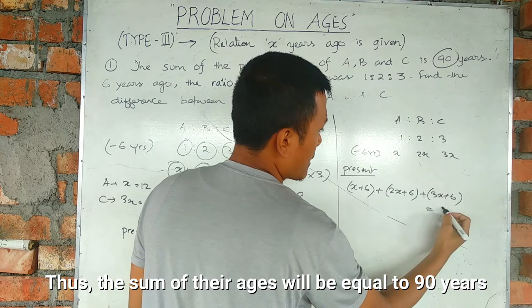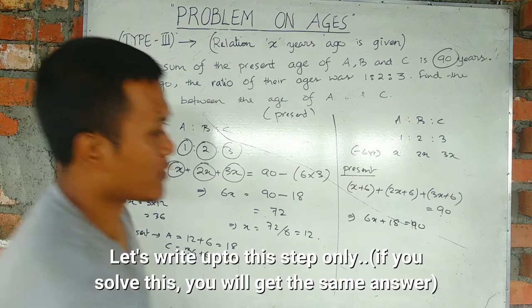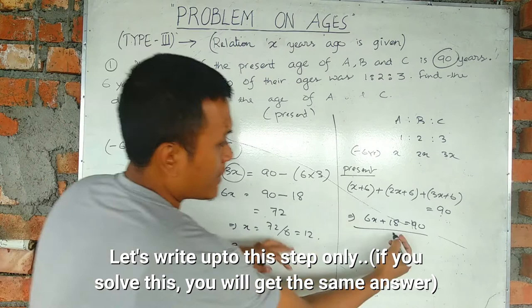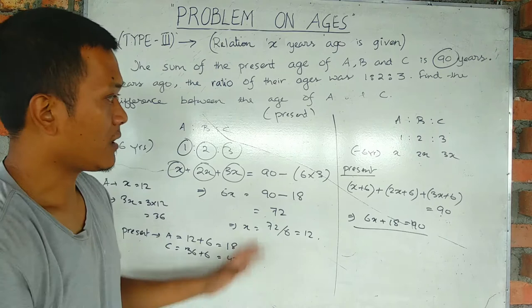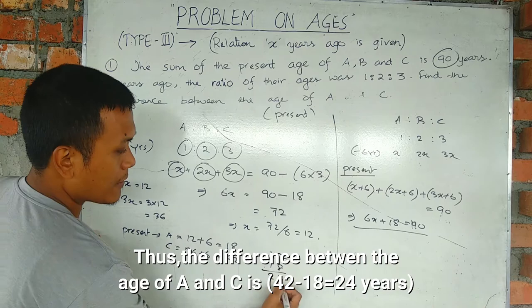x plus 6 plus 2x plus 6 plus 3x plus 6 equals 90. 6x plus 18 equals 90. The present difference between A and C is 42 minus 18 equals 24.